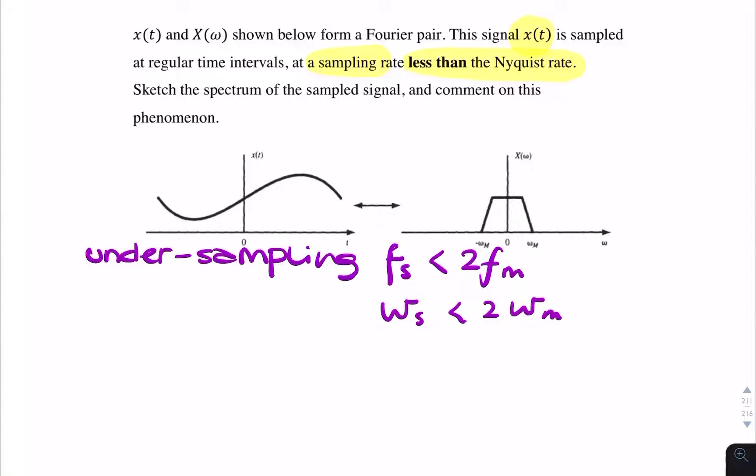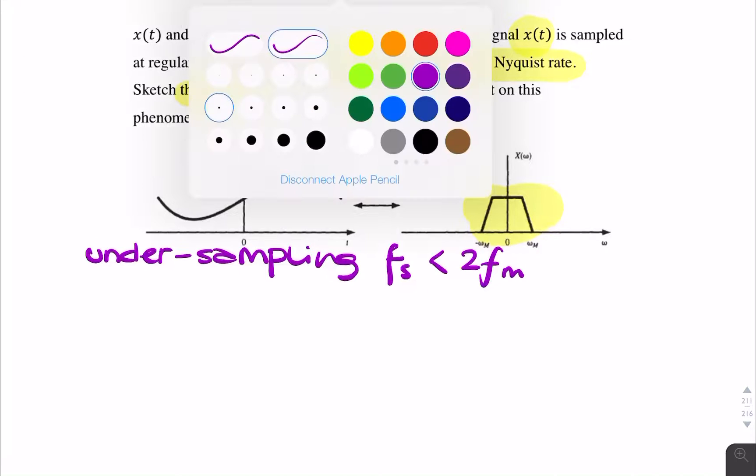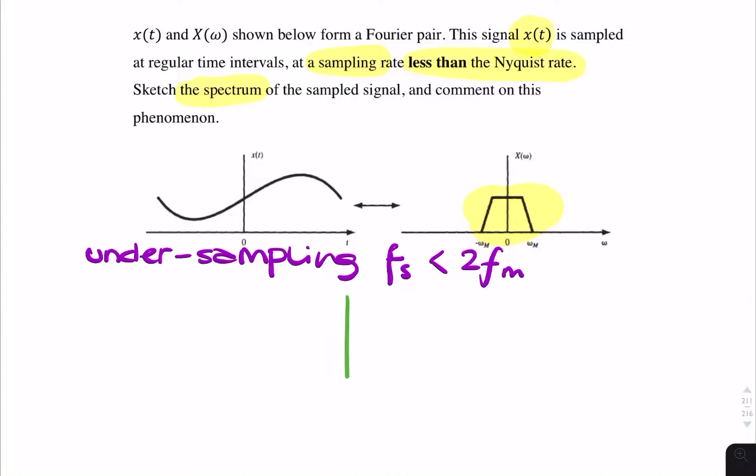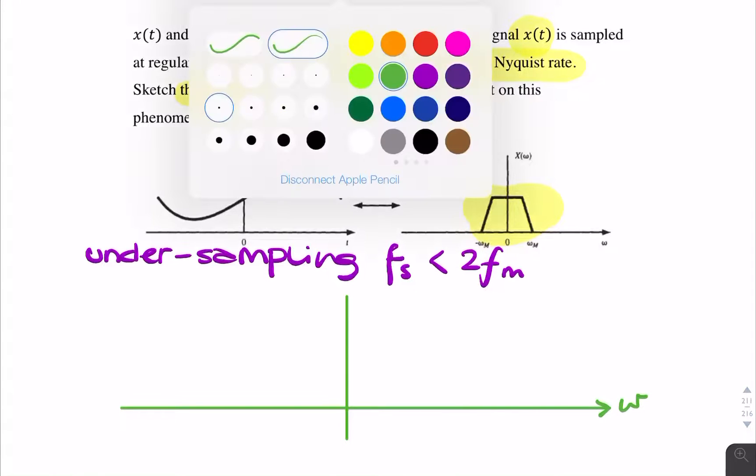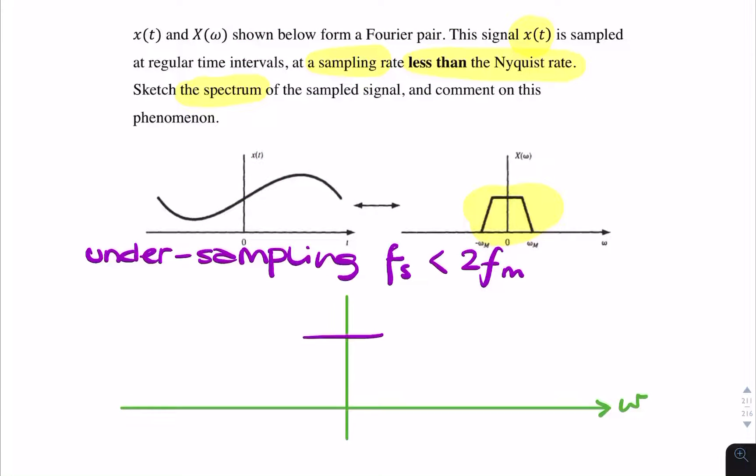And the question is asking for the spectrum. So the spectrum will look something like that, but replicated or repeated an infinite number of times. So let me make space for that. So if we draw amplitude and frequency axis, we label that omega. And this is your first spectrum from minus omega m to omega m.